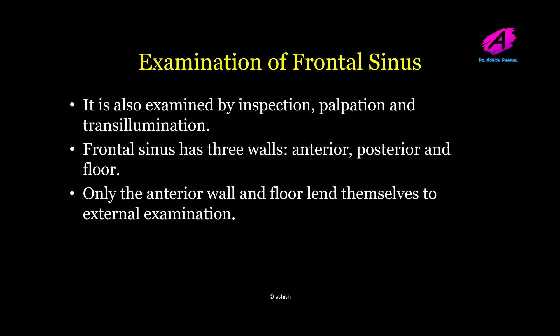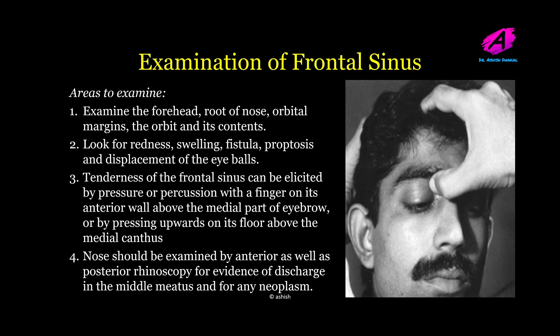Coming on to examination of the frontal sinus, it is also examined by inspection, palpation, and transillumination. The frontal sinus has three walls — anterior, posterior, and floor — and only the anterior wall and floor are examined externally. Areas to examine include the forehead, root of nose, orbital margin, and orbit and its contents. You have to look for redness, swelling, fistula, proptosis, and displacement of the eyeballs, because the eye is in close relation with the frontal sinus, with the superior wall of the orbit forming part of the floor of the frontal sinus.